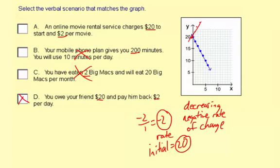And this D, where you're representing paying back $2, you're taking $2 away from the amount you owe him, so it's a negative rate of change. So that's why D is the best choice here.